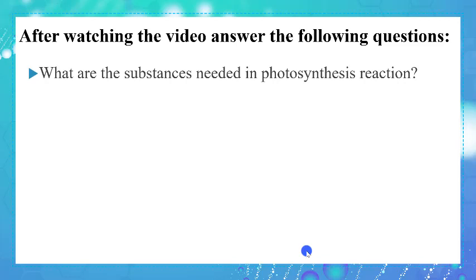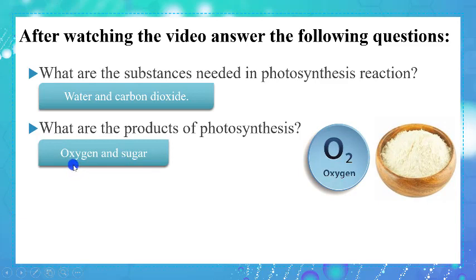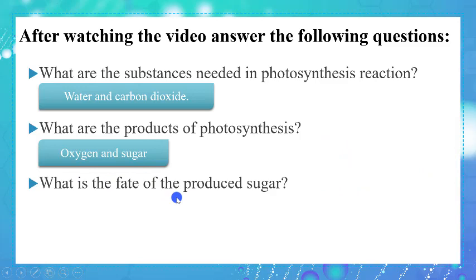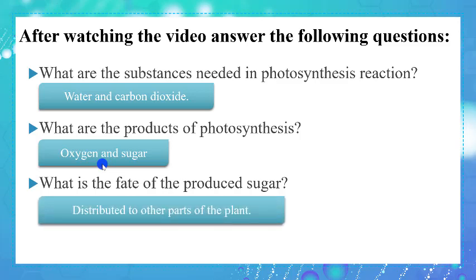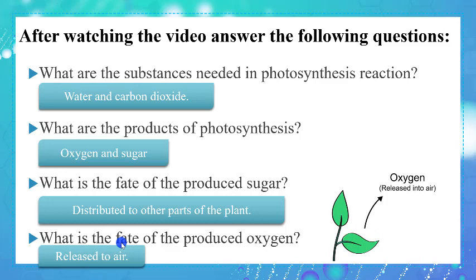What are the substances needed in the photosynthesis reaction? The plant needs water and carbon dioxide. What are the products of photosynthesis? A plant produces oxygen and sugar — so the products of photosynthesis are oxygen and sugar. The plant distributes the sugar to the other parts of the plant, meaning sugar is transferred from the leaves to the other parts. As for oxygen, it is released to the atmosphere.